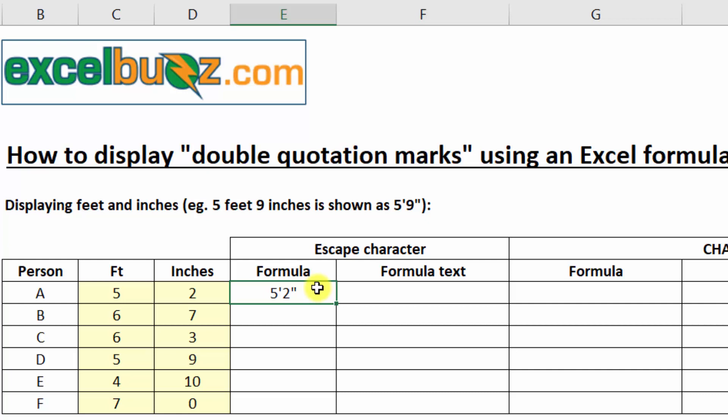The way we do that is by typing an equals to start the formula. C10, which will bring back the 5. Then an ampersand or the and sign. And now we want a string of text, just being the apostrophe.